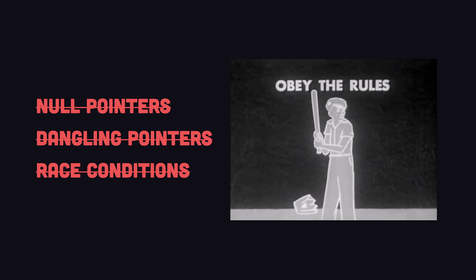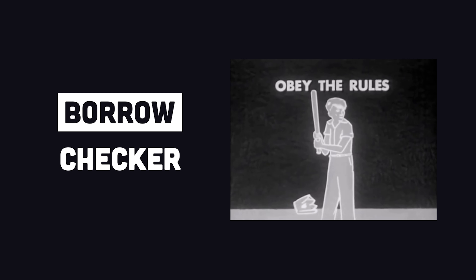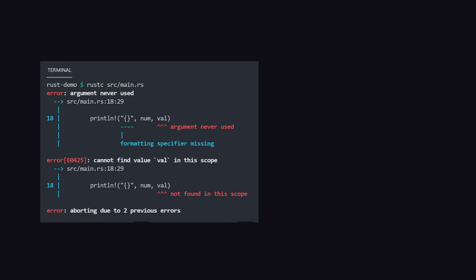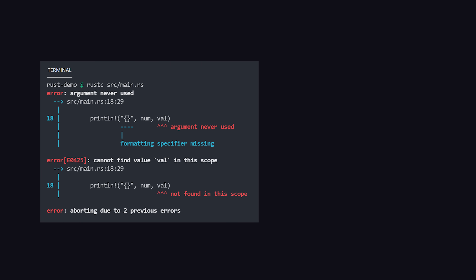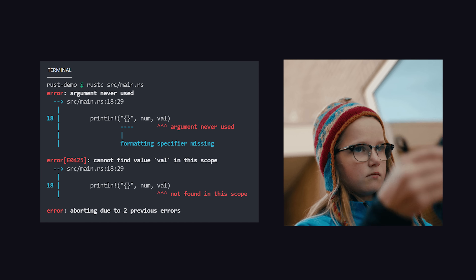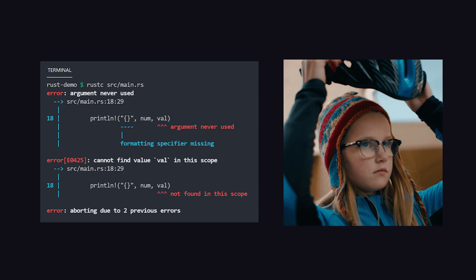There are a ton of rules to go along with this system that the Rust BorrowChecker will validate at compile time. These rules keep your code safe while providing absolute control over performance.